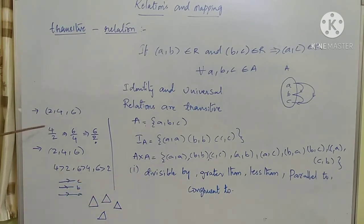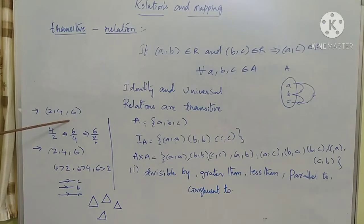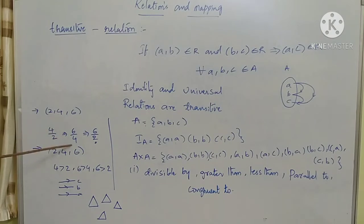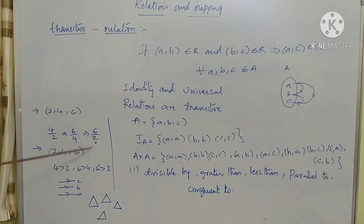For the divisible by example, take elements 2, 4, and 6. Here, 4 is divisible by 2, and 6 is also divisible by 4. This implies that 6 is also divisible by 2. This type of relation we can call transitive.